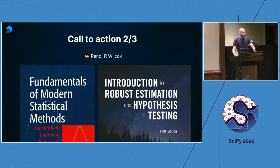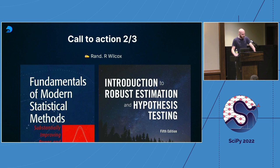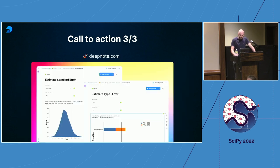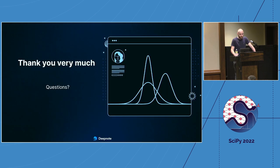Please check out Rand Wilcox's books — these changed my life. There's an incredible amount of evidence for robust methods and against traditional methods. The book on the left is an easy read; the book on the right is more technical, so I'd suggest starting with the first one. And lastly, visit Deepnote — paradoxically, like Python, it is simple, easy to use, and incredibly powerful. Thank you very much.